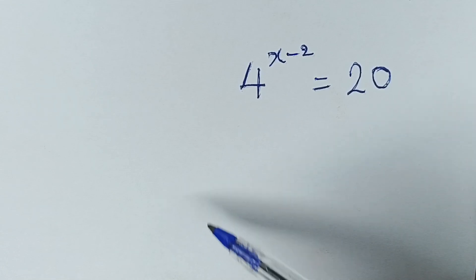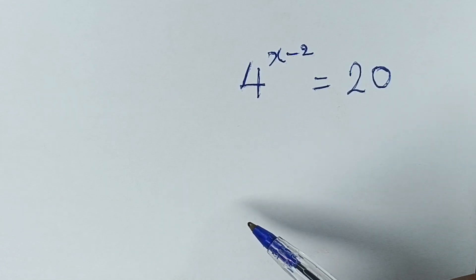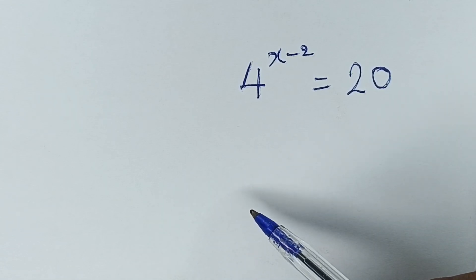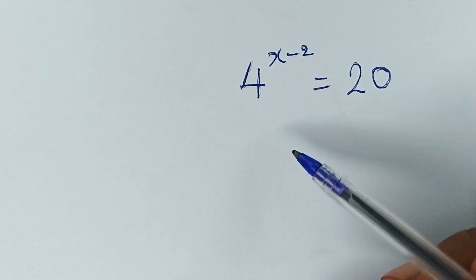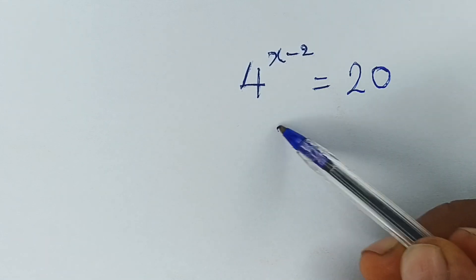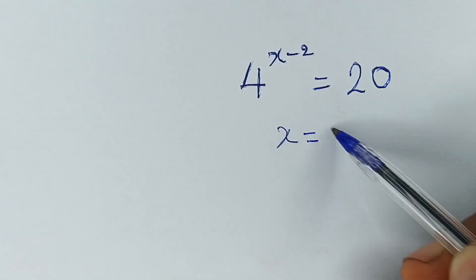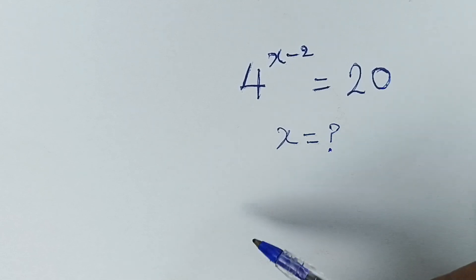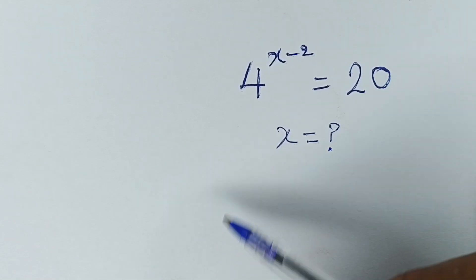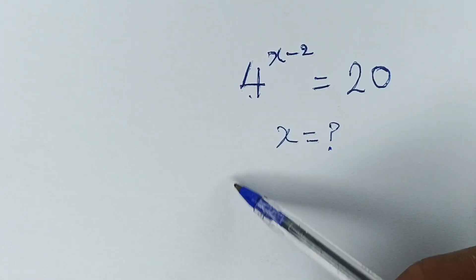Alright, let's solve this equation together. It says 4 raised to the power x minus 2 is equal to 20. We are required to find x.